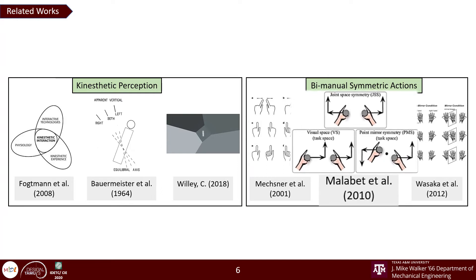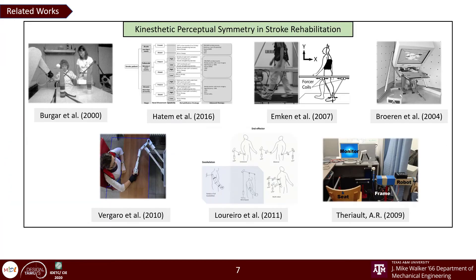Malabit et al. discusses three types of kinesthetic symmetry as they explore for robot-based rehabilitation. They particularly emphasize on joint-based symmetry which can be described as a mirror motion of the body, for example, our arms above the shoulder joint, which they found to be effective for neurophysical therapy. We have also seen kinesthetic perceptual symmetry being explored for rehabilitation in stroke patients using robotics as well as virtual reality.